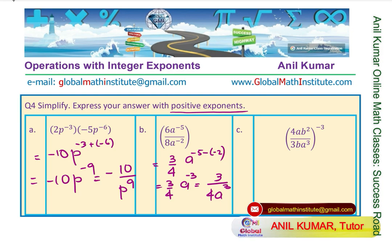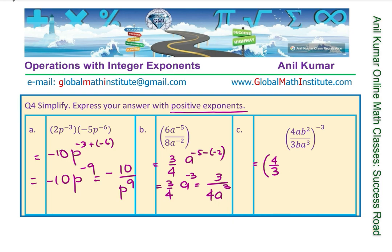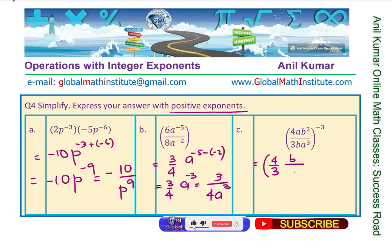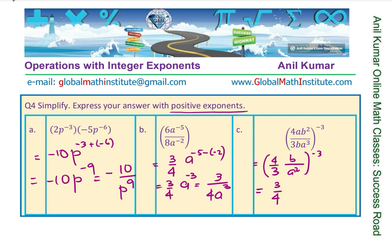The next one: 4ab squared over 3ba cubed. Simplify within the bracket first. We have 4 over 3, a cancels with a so we don't have a in the numerator, b cancels with b giving just b in the numerator, and the denominator gives us a squared. This is to the power of minus 3, so we flip everything inside. a becomes 2 times 3 equals 6, and b to the power of 3 is our answer.